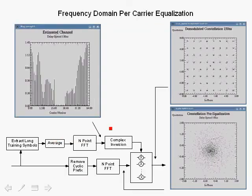Here we indicate how we will achieve equalization by actually using zero forcing on a per-carrier basis. So the first operation is to extract the long training symbols after timing synchronization.